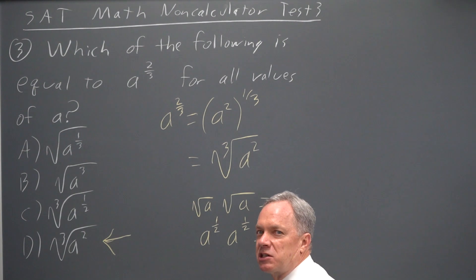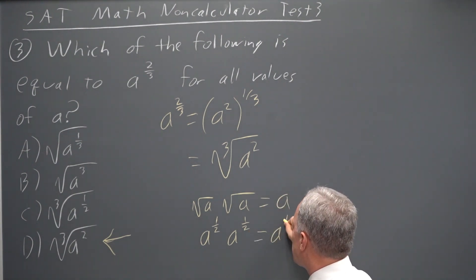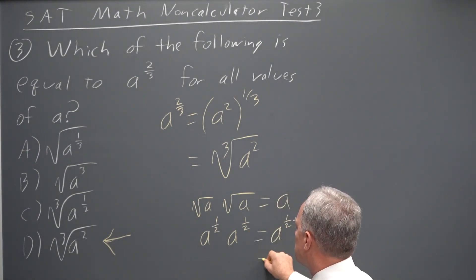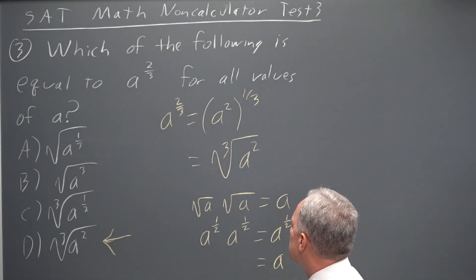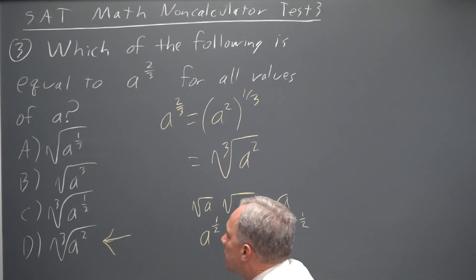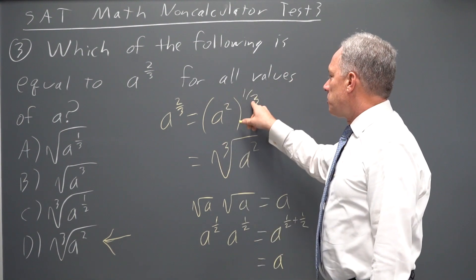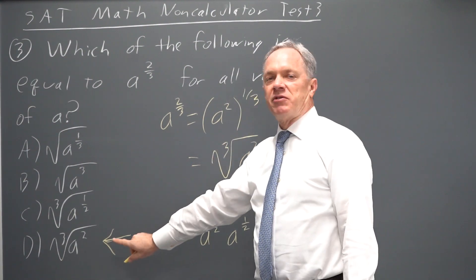If you have products of the same base, you add exponents, so this is a to the one-half plus one-half, which is a to the one. So a to the one-half and root a are the same, and that can help you to remember that a one-third power is a cube root, which gave us answer d.